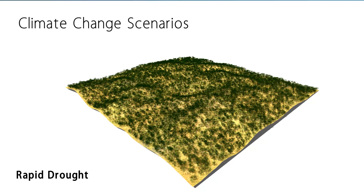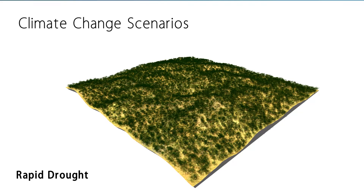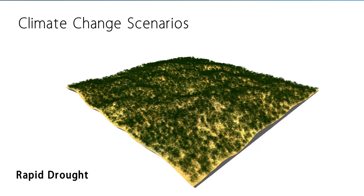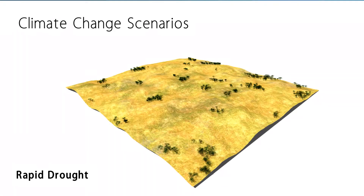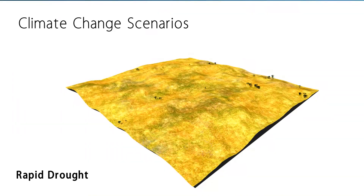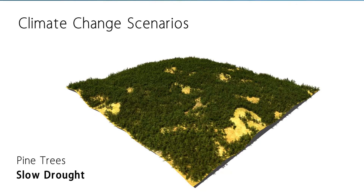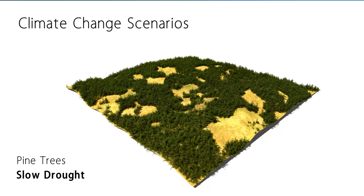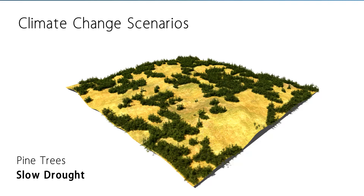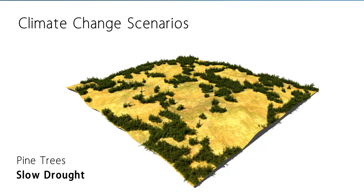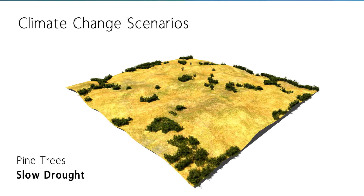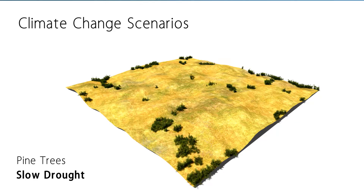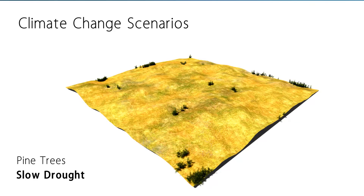If we decrease precipitation by a factor of 10, the same shrubland exhibits a dynamic vegetation pattern that is less uniform compared to the slow drought scenario. We repeat the slow drought experiment with a more persistent pine tree species. Due to the slower adaptation of pine trees, gaps form more readily compared to the experiment with the faster growing shrubs.